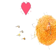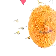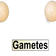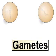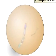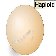Sperm unite with an egg post copulation, or after sex. Now let's zoom in on these gametes. Remember, they are haploid. Each gamete represents half of the genetic material from the parent.